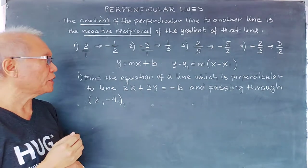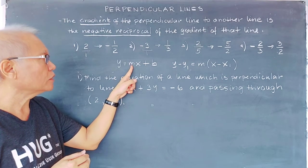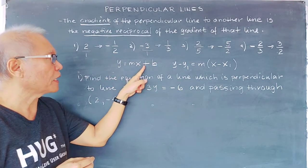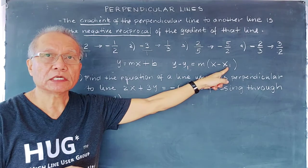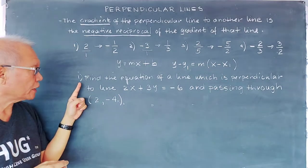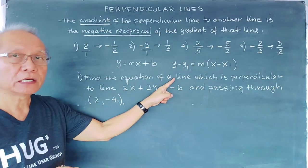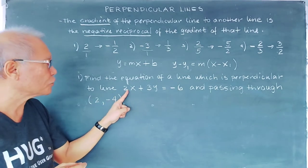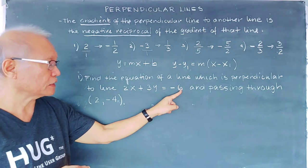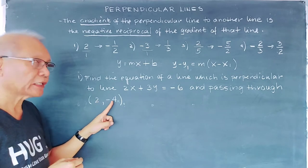There are two formulas we are going to use to form perpendicular lines. We have the slope-intercept form — y equals mx plus c — and the point-slope form. Let's have an example: find the equation of a line which is perpendicular to 2x plus 3y equals negative 6, and that line will pass through the point (2, −4).